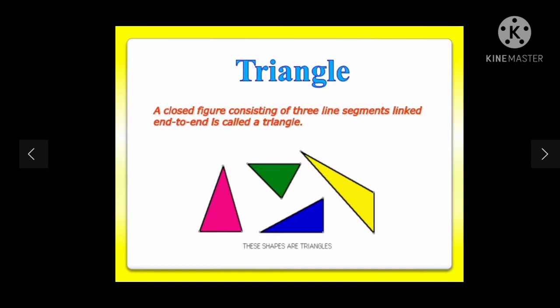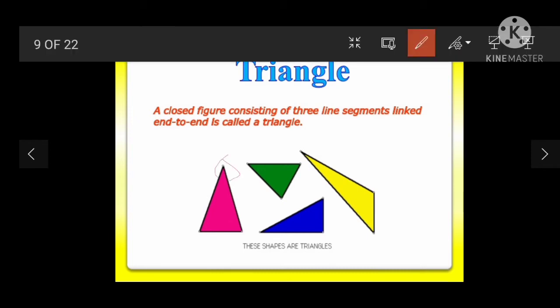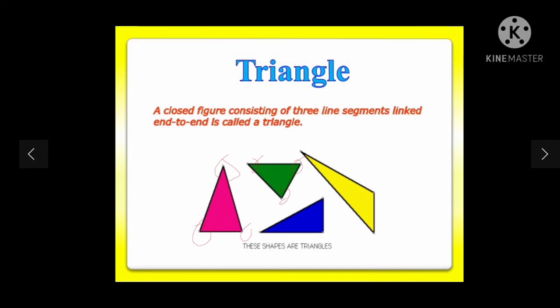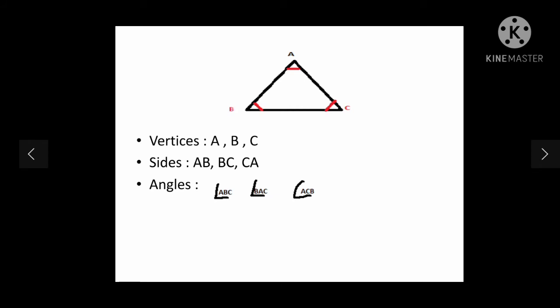Now, here you can see there are different kinds or different types of triangles. It is a different type. If I say the green one is a triangle and the yellow, blue, and pink ones are not triangles, then we are wrong. Triangle can be in any size, any form. What should happen is these three corners. You can see these three corners are very important to form a triangle and that is why it is said a closed figure consisting of three line segments linked end to end is called a triangle.